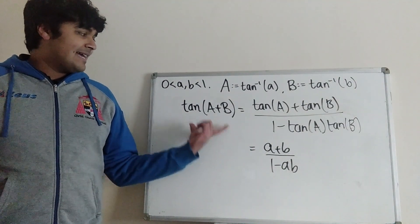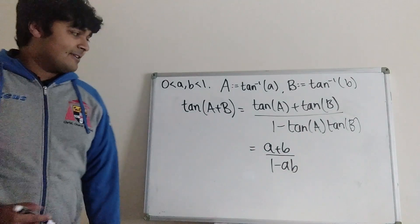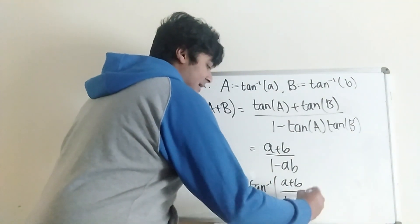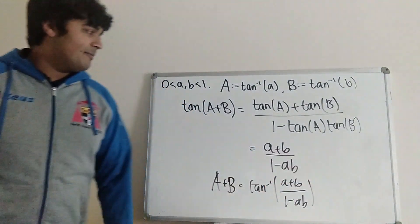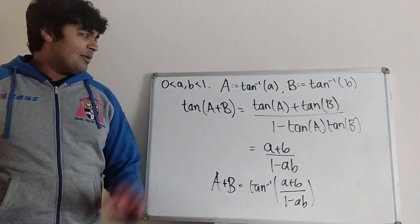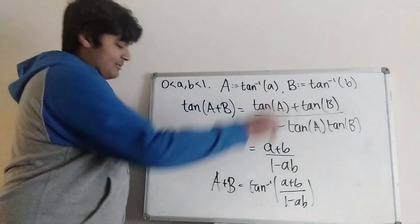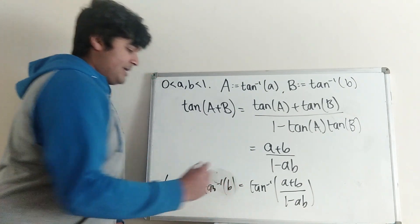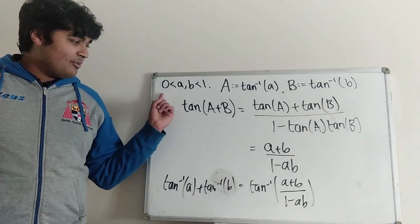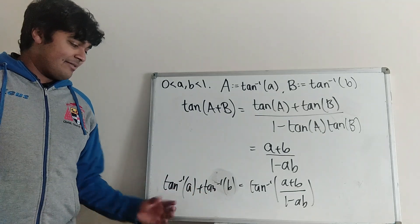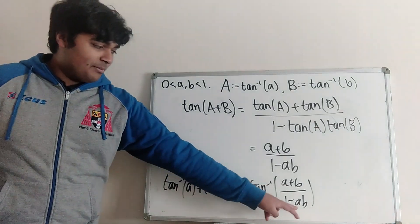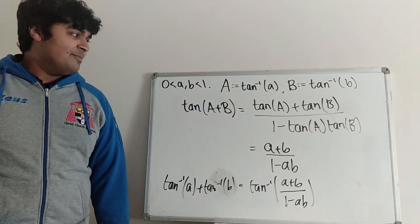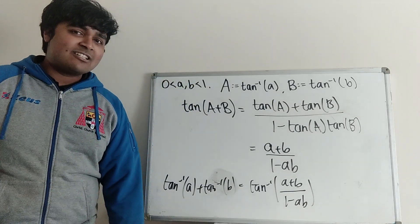We've still got the left-hand side tan of (A plus B), so we take the inverse tangent of both sides to give A plus B equals inverse tangent of (a plus b) all over (1 minus ab). We don't have to worry about adding a multiple of pi or anything like that because we've got a and b between 0 and 1. Big A and big B, using our definition, is just inverse tangent of a plus inverse tangent of b. So we get the formula we were looking for. This formula also holds if either a or b are 0, so we can extend this to a and b also being 0.